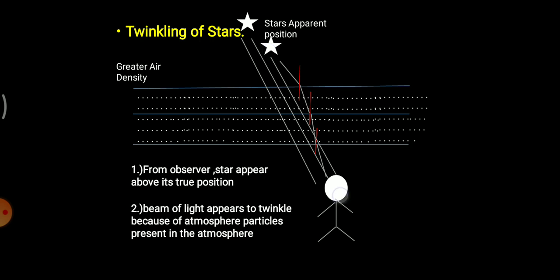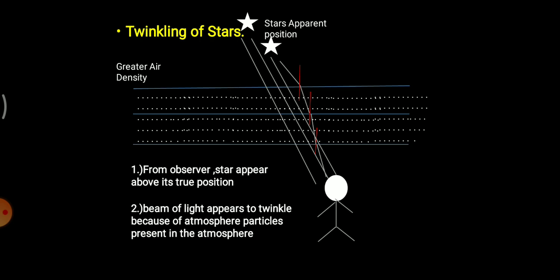The celestial object from the surface will appear higher from its true position. As you can see, the perceived position is higher than the true position. So we have understood that whatever ray of light comes from a source, when passed through different layers of atmosphere, the object will appear higher from its true position.